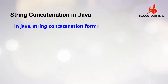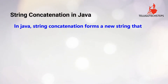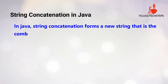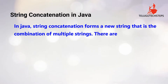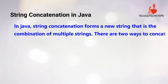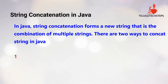First of all, in Java, String Concatenation forms a new string — that is the combination of multiple strings. One string forms a new string through concatenation. There are two ways to do this. First, by using the plus operator.